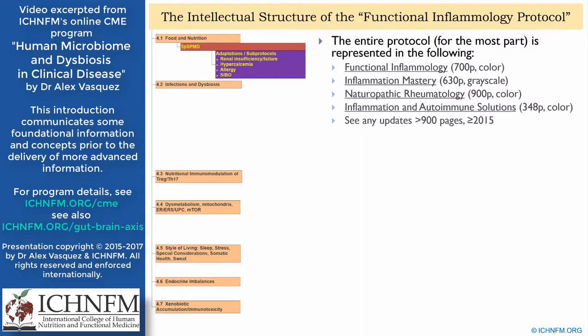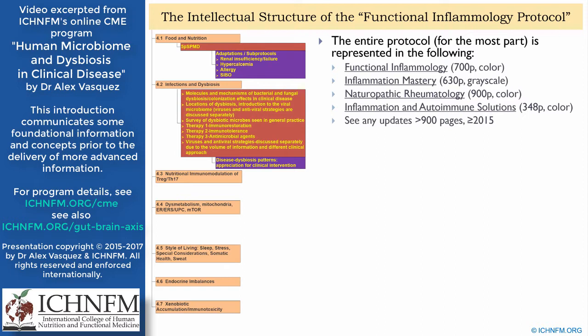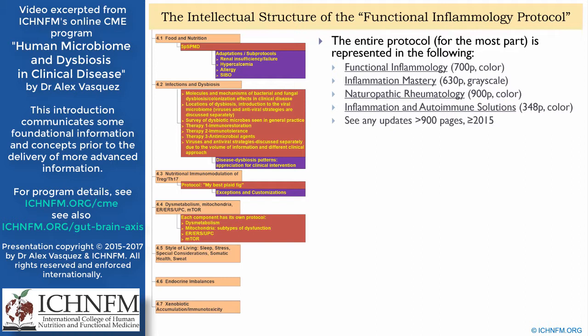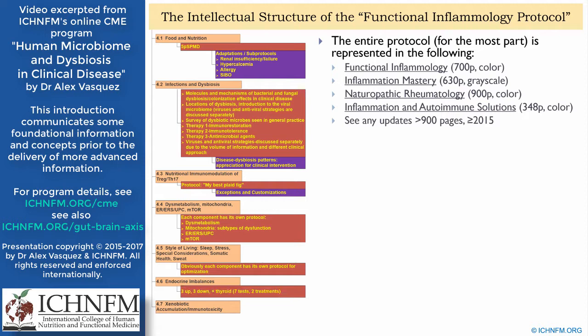For example, in some patients we really have to focus on food and nutrition; in other patients we give more attention to infections and dysbiosis. In other patients we might give more attention to balancing their immune phenotype — providing more balance to the ratio of T regulatory cells to TH17 cells, often enhancing T regulatory cells at the expense of TH17 cells. In some patients we need to focus on mitochondrial performance through specific protocols. In some patients we need to focus more on lifestyle, including sleep optimization, stress management, and exercise. In a lot of patients we have to look at balancing hormones, since many hormones can have either a pro-inflammatory or anti-inflammatory effect.